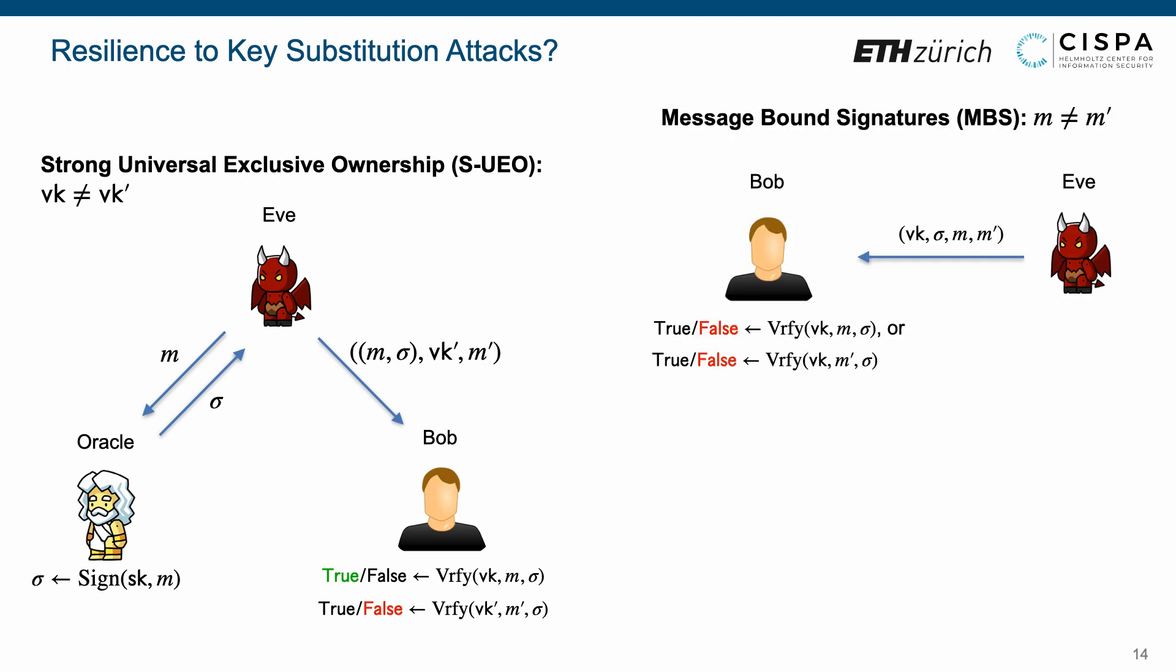Moreover, we say a signature scheme has message-bound signatures if the verification algorithm cannot pass upon the same verification key and signature and two distinct messages output by an adversary.